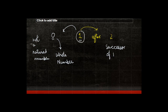Zero is a whole number, not a natural number. The predecessor of a number is one less than the number, but the number one does not have a natural number as its predecessor. The predecessor of one is zero, but since zero is a whole number and not a natural number, we say that number one does not have a natural predecessor.